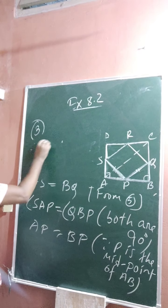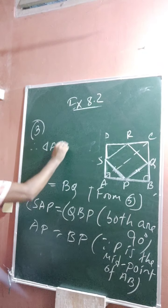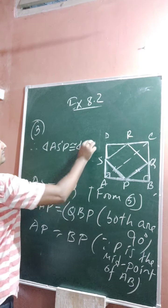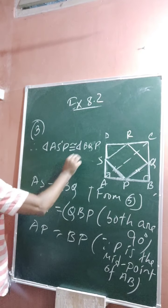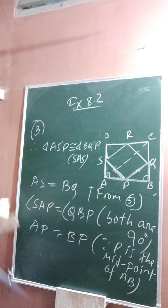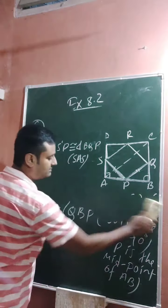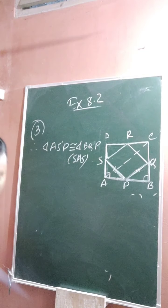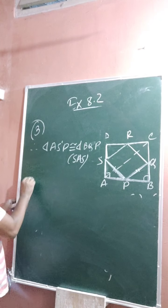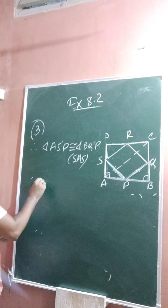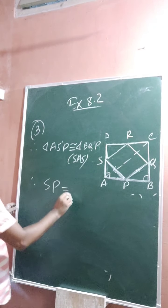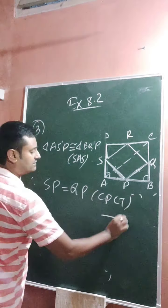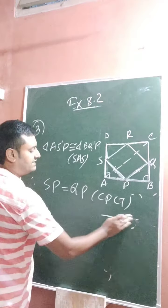Therefore, triangle ASP is congruent to triangle BQP by SAS — Side Angle Side. Since the triangles are congruent, the corresponding parts must be equal. Therefore SP is equal to QP. Give this as equation number 6.